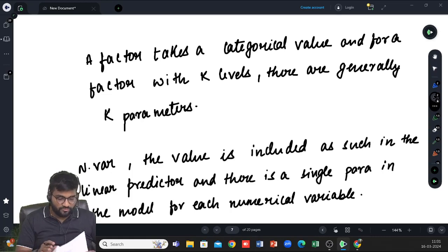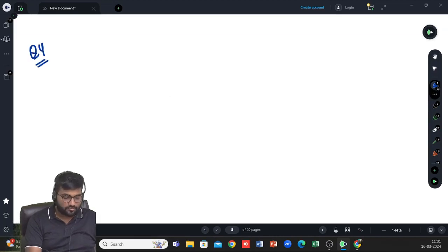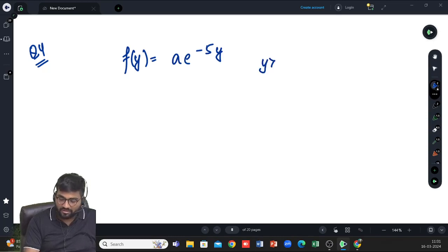Question number 4. Random variable y has probability density fy is a e to the power minus 5y, y will be greater than b. The moment generating function of y is myt. Write down the bounds of the integration required to calculate myt. Determine an expression giving the constant a in terms of b by using an answer for myt.